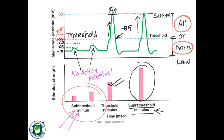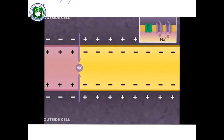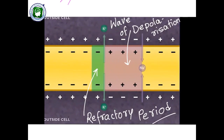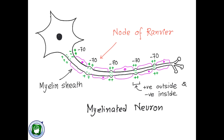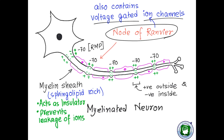Now let's observe the propagation of action potential in myelinated and unmyelinated neurons. A region of depolarization moves forward, with a region of hyperpolarization following it, which acts as the refractory period to prevent backflow of action potential. In the axon of a myelinated neuron, the separation of charges and the generation of resting membrane potential can be found only at the nodes of Ranvier. The voltage-gated sodium channel and voltage-gated potassium channel can only be found at these nodes. So action potential is generated only at the nodes of Ranvier in a myelinated neuron.